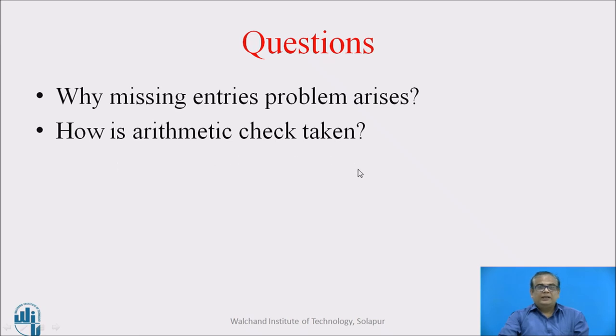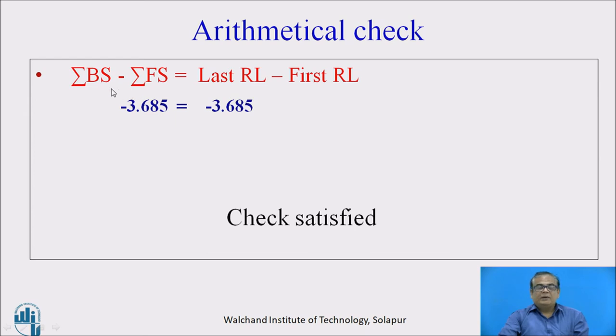Now how arithmetic check is taken? Arithmetic check is taken by using the equation sigma backside minus sigma foresight is equal to last RL minus first RL. This is the arithmetic check in collimation plane method. We know. Now summation of backside minus summation of foresight it comes to be minus 3.685 and last RL minus first RL also comes to be minus 3.685. So the equation is satisfied. Our check is obtained. There is no need of revision of calculations. We know arithmetic check gives us idea about only correctness of calculations in the table. It does not give any idea about correctness of readings remember.